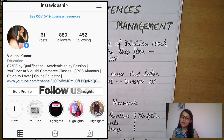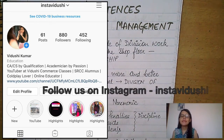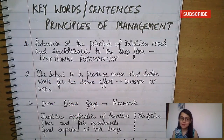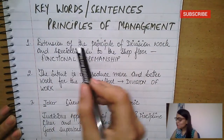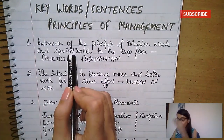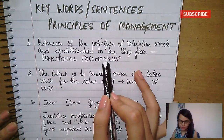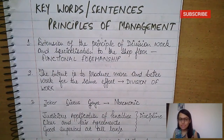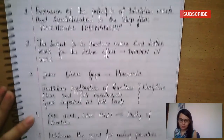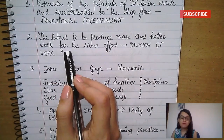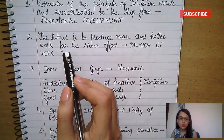Hello champs, welcome to our video series on keywords and key lines mnemonics from every chapter of Business Studies. Today we are talking about the Principles of Management chapter. Let's start. Extension of the principle of division of work and specialization to the shop floor and factory is functional foremanship. These keywords will help you in MCQs and case studies and give you a short revision. The intent is to produce more and better work for the same effort — that is division of work, which happens through specialization.